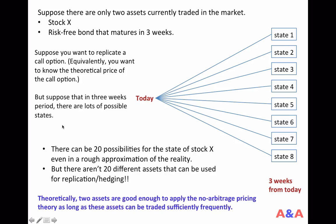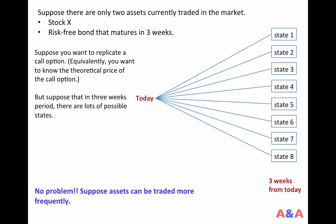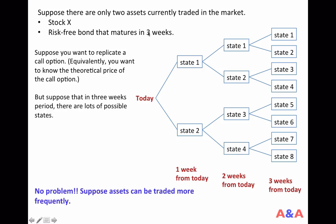Suppose that in three weeks there are lots of possible states — let's say eight possible states. No problem. Suppose that assets can be traded more frequently than just today and in three weeks. Suppose that these two assets, stock X and risk-free bond, can be traded once a week. And every week there are only two possibilities: up or down. In one week period the stock price can go up or go down, and in the next week again it can go up or go down.